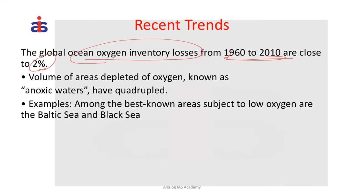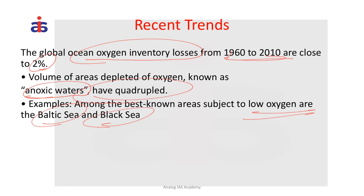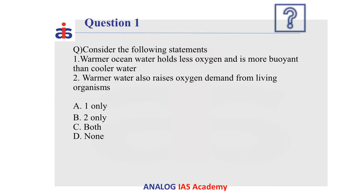These waters are literally lifeless and are technically called anoxic waters. The volume of water present in anoxic areas has quadrupled, making this a very serious environmental concern for the ocean ecosystem. Some of the best-known areas subject to low oxygen are the Baltic Sea and the Black Sea — among the largest trading areas between European countries, witnessing a lot of shipping activity.